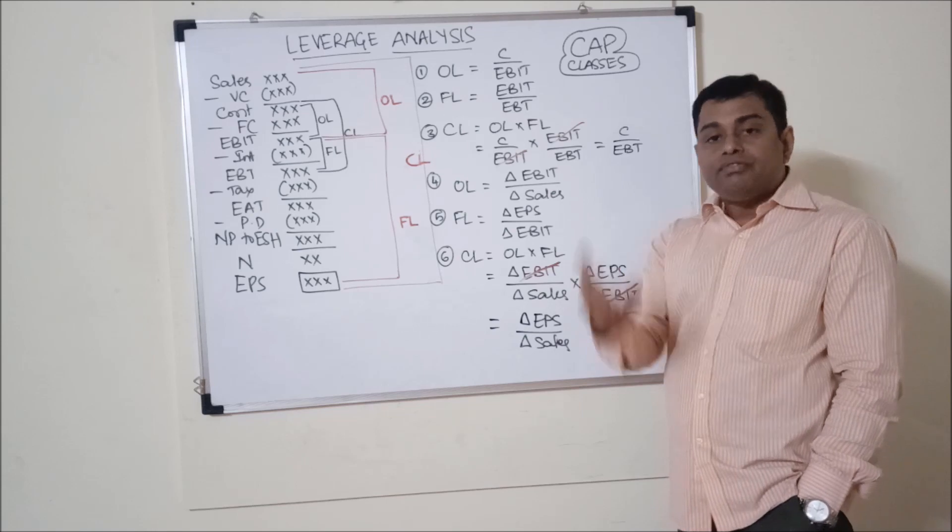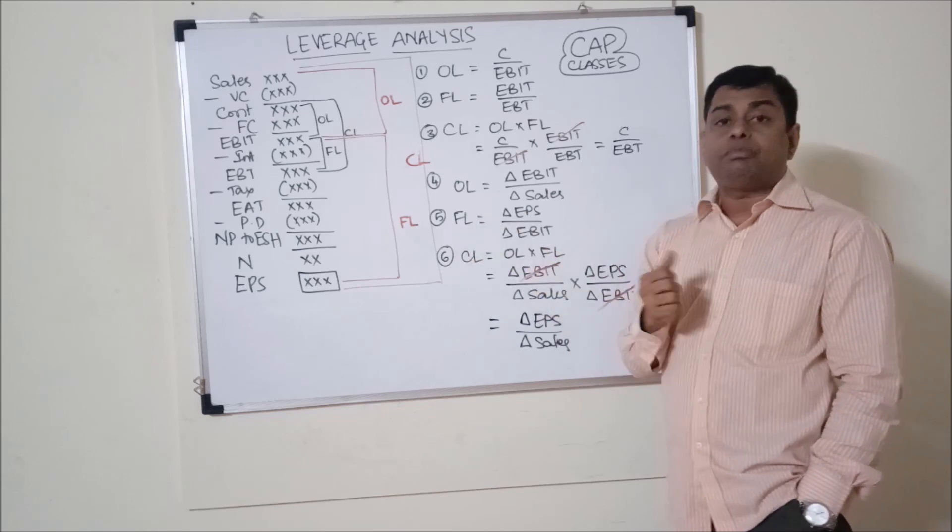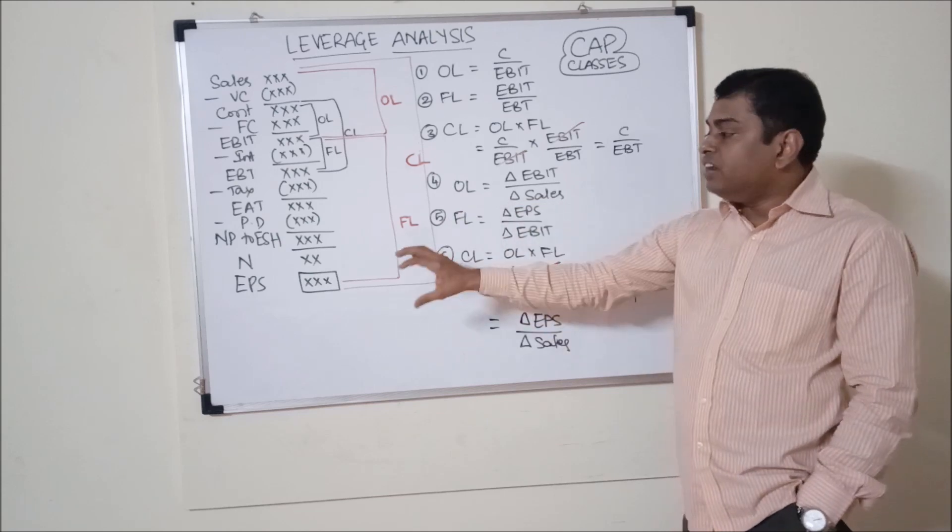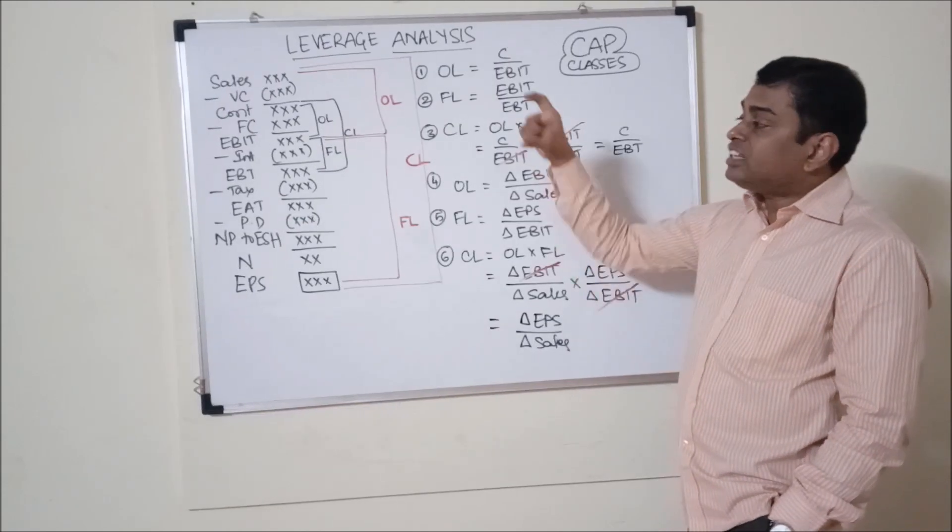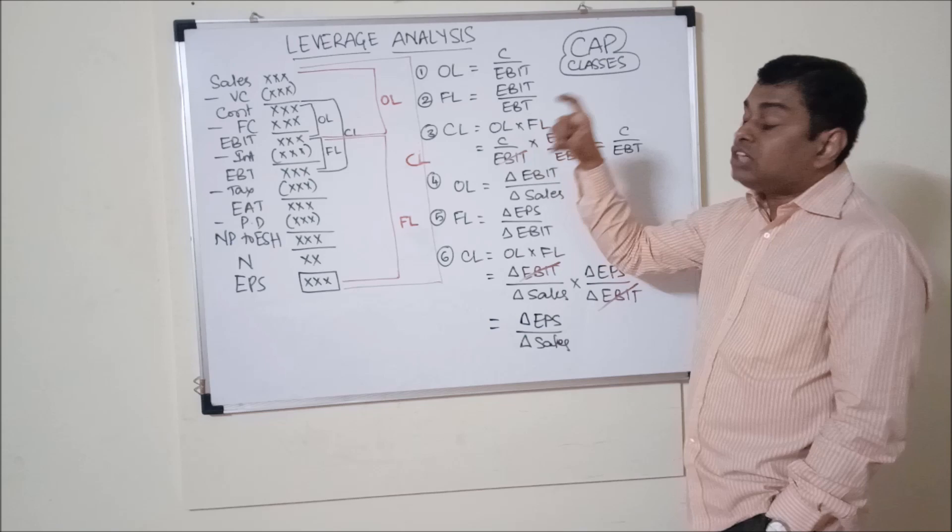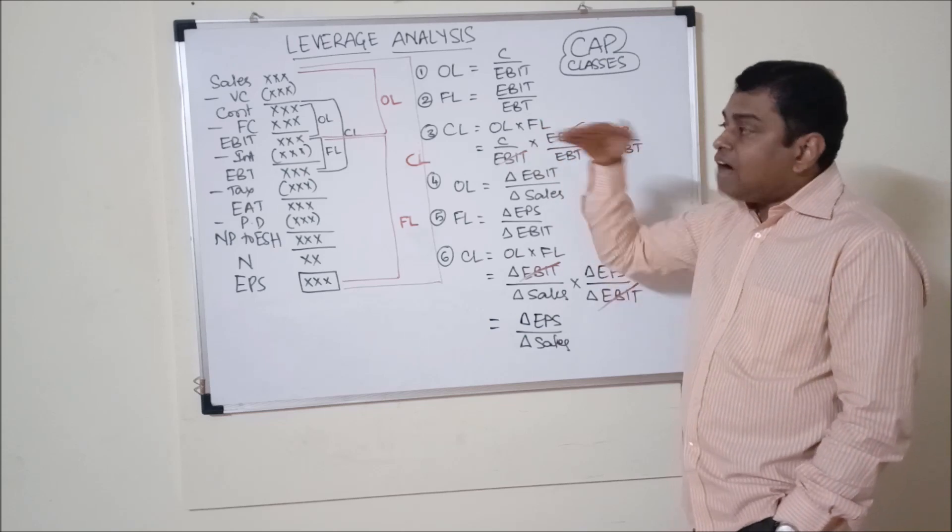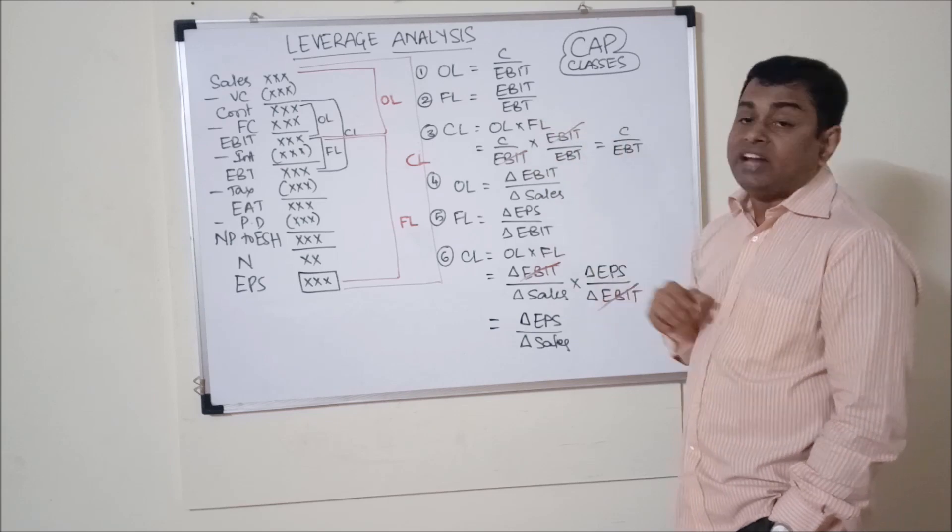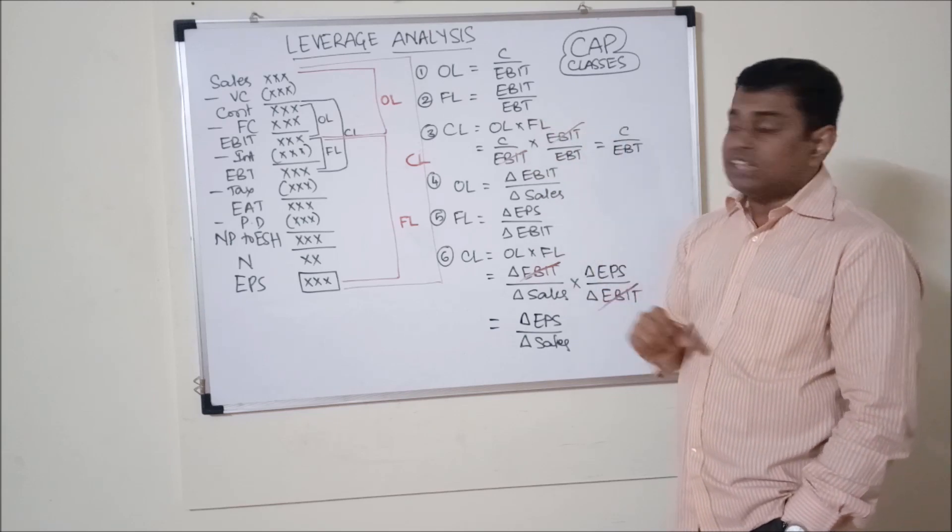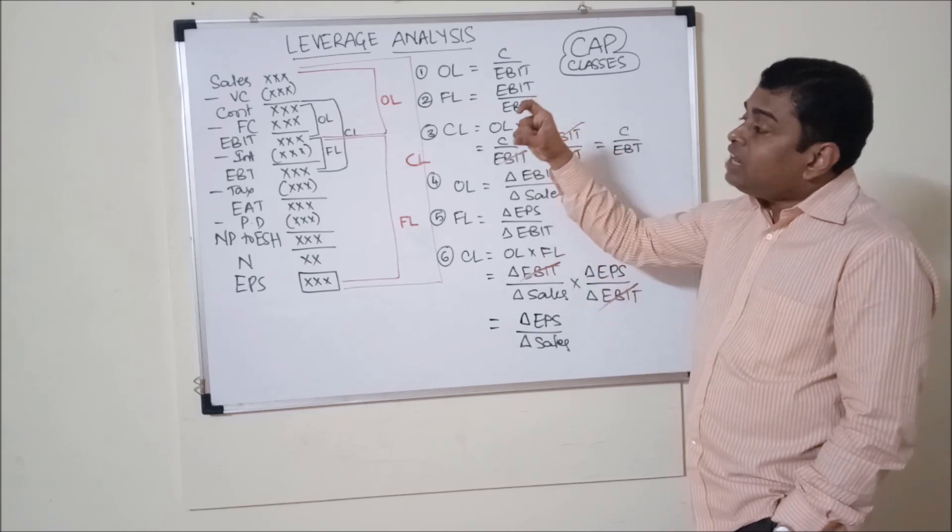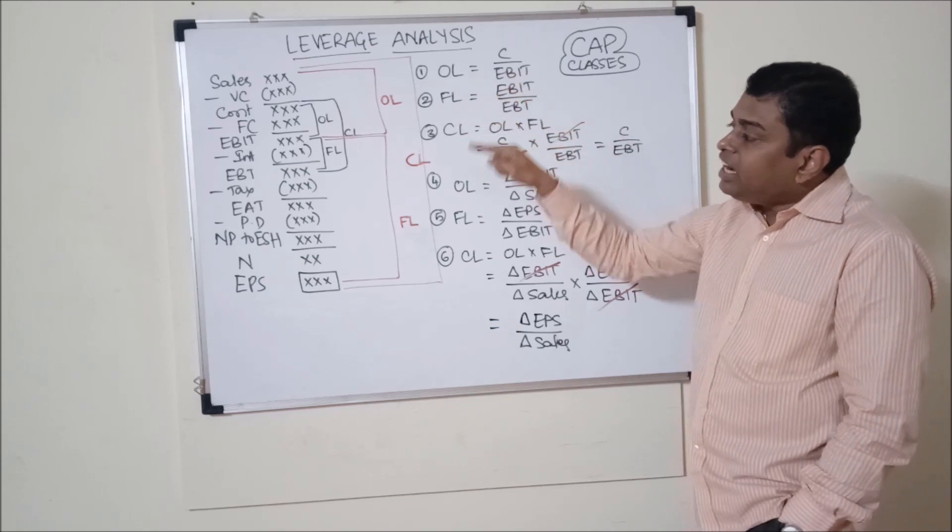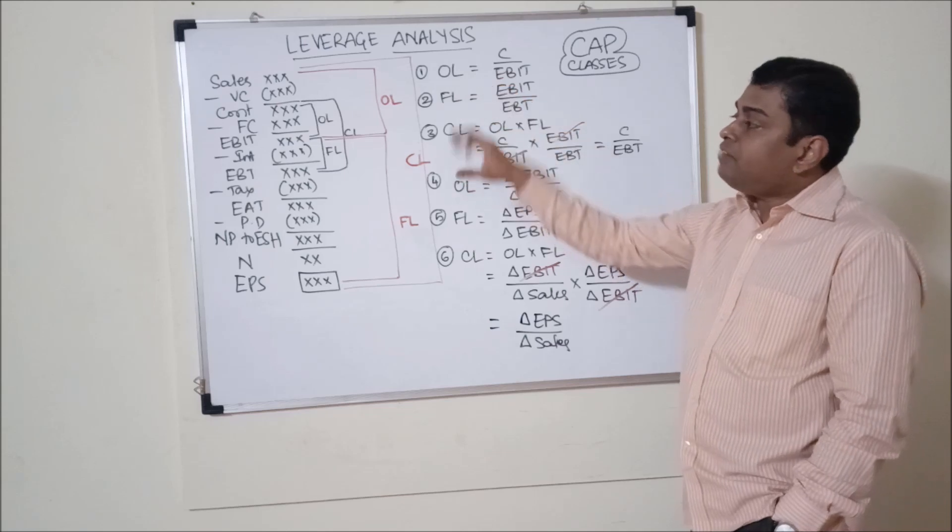From earnings after tax we pay preference dividend first, then we get net profit available to equity shareholders. Then we divide by the number of shares, we will get EPS. So the first 5 lines that you see, that is operations of the business. After that from EBIT onwards you see that is the impact of financing of the business. So operating leverage is contribution per EBIT. Financial leverage is EBIT to EBT. Combined leverage is contribution per EBT.